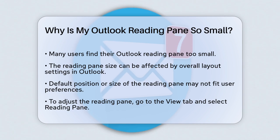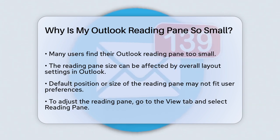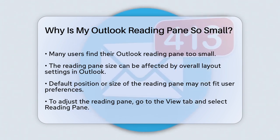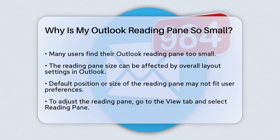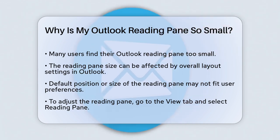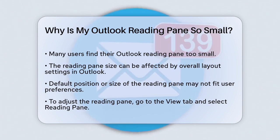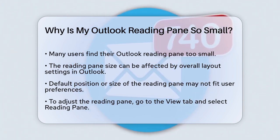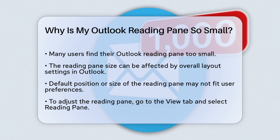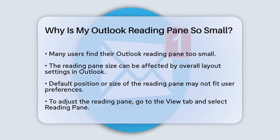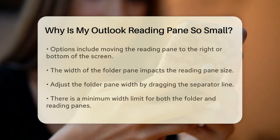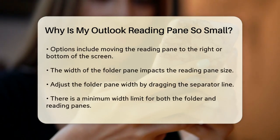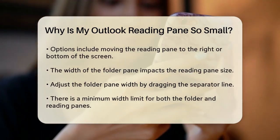First, the size of the Reading Pane can be influenced by several factors, including the overall layout settings in Outlook. One common reason is that the Reading Pane might be set to a default position or size that doesn't suit your needs. To adjust this, you can go to the View tab in Outlook, then select Reading Pane from the Layout group. Here, you can choose to move the Reading Pane to the right or bottom of your screen, which might give you more space to work with.